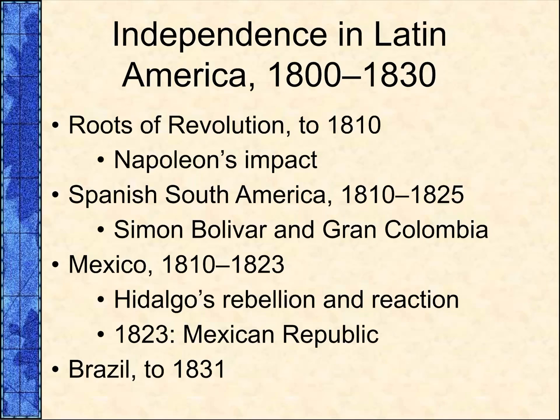King John VI of Portugal ruled his kingdom from Brazil until 1821, when unrest in Spain and Portugal led him to return to Lisbon. His son Pedro remained in Brazil and in 1822 declared Brazil an independent constitutional monarchy with himself as king. Pedro had liberal policies including opposition to slavery, which alienated the slaveholding elites. Street demonstrations and violence led Pedro I to abdicate in favor of his son Pedro II, who reigned until republican leaders overthrew him in 1889.